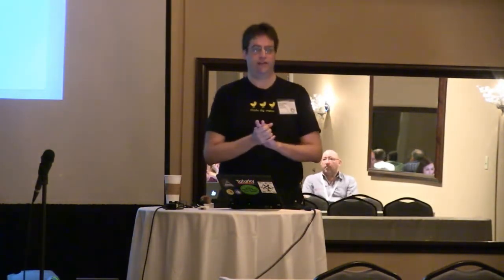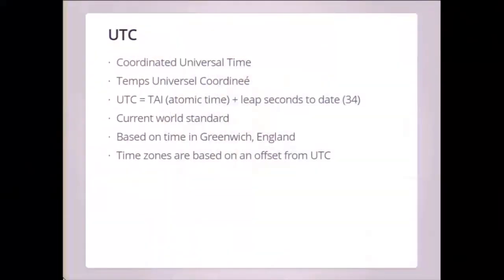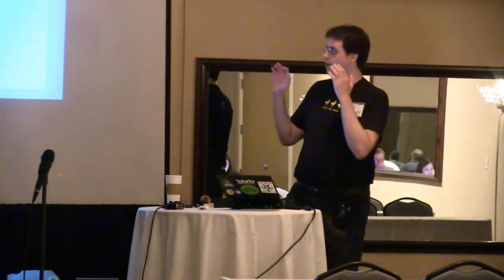People doing physics generally just use TAI and don't worry about leap seconds — they're just concerned about how long things take. UTC is based on the time in Greenwich, England. You might have heard of Greenwich Mean Time — it's basically the same thing as UTC. All time zones are based on an offset from UTC, which means all time zones include these horrible leap seconds.